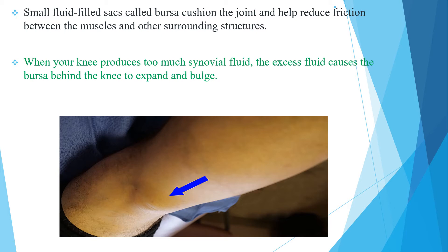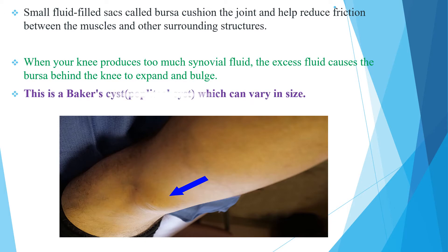When your knee produces too much synovial fluid, the excess fluid causes the bursa behind the knee to expand and bulge. This is a Becker's cyst or popliteal cyst, which can vary in size.